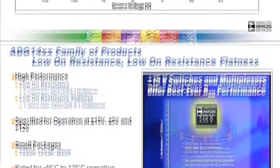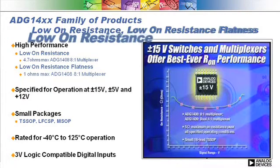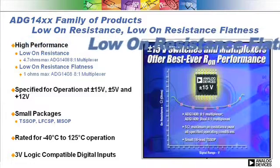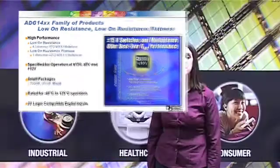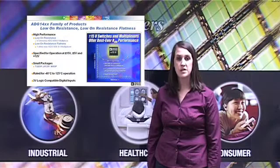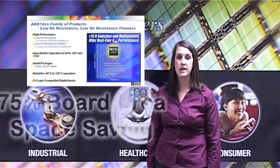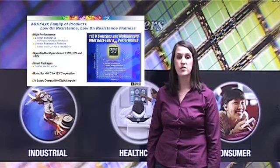The ADG14xx family of plus-and-minus 15V switches and multiplexers have industry-best low on-resistance and on-resistance flatness. These parts are available in TSOP and ultra-small LFCSP packages, enabling up to 75% board-area space saving compared to industry-standard solutions.